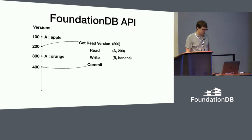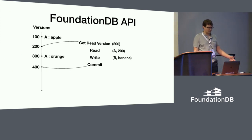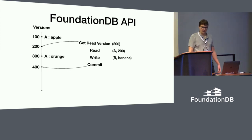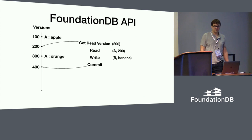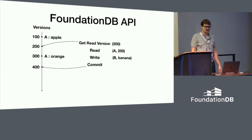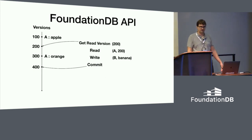When you finally go to write, the concept is: if none of the keys you read changed in the interval between when you started your transaction and when you committed, it's like you did all your reads at the final commit version — at an instantaneous point in time. That's the optimistic concurrency model of FoundationDB. As a consequence, if someone changes one of the keys you read in this short window, we fail your transaction and as a client you retry.